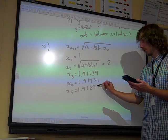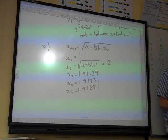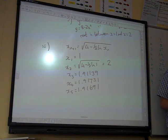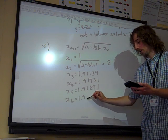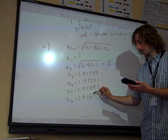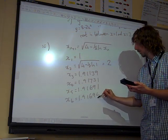1.91691. We've now had two answers that have rounded to 917. We'll do one more. x_6 is 1.91694.